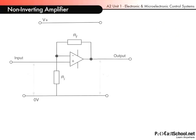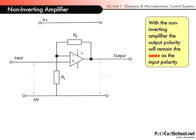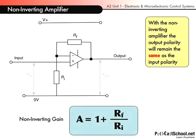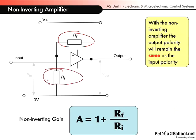Now the non-inverting amplifier. It's a little different in that the RF is fed back as before, but the input has gone straight into the non-inverting input. With the non-inverting amplifier the output polarity is the same — so we don't have that reverse polarity. This time the non-inverting gain is given by one plus the feedback resistor RF divided by RI. No minus sign this time — it's just one plus that division. That is the gain for the non-inverting amplifier, and to find the output voltage you simply multiply that gain by the input.